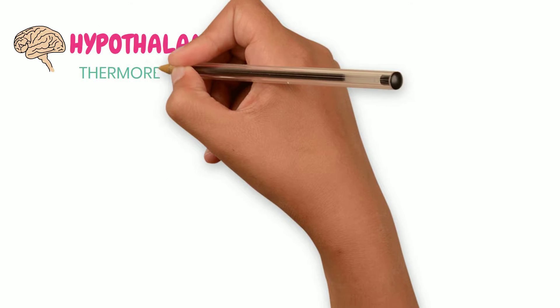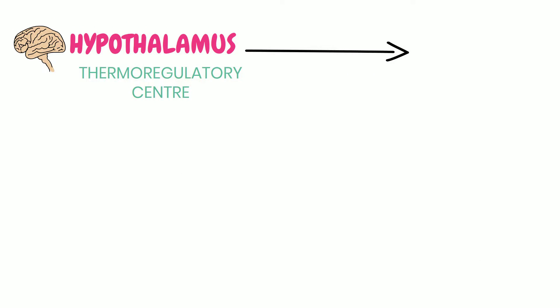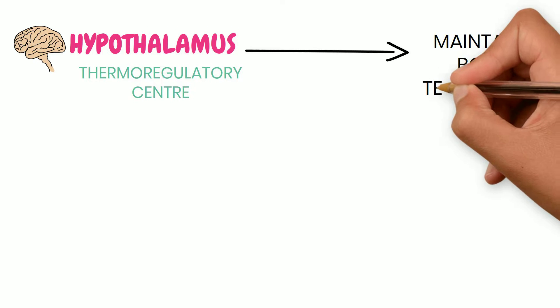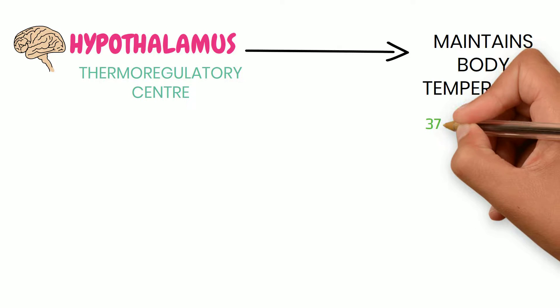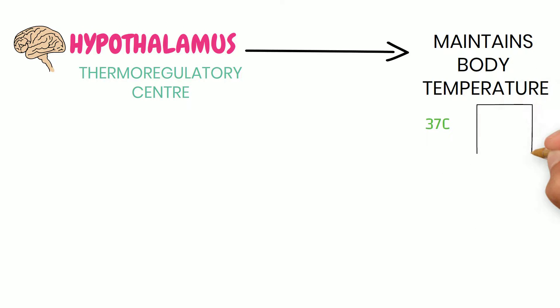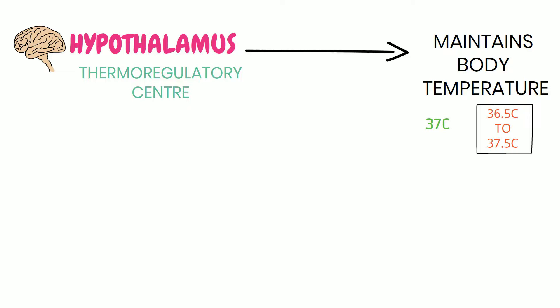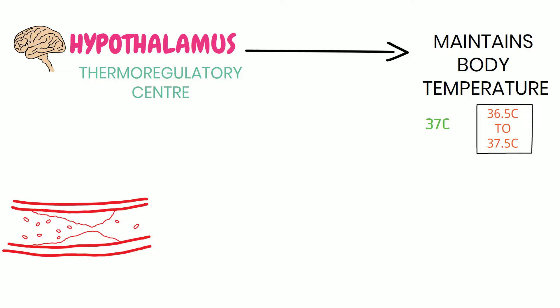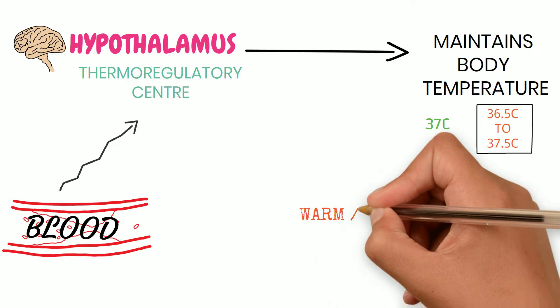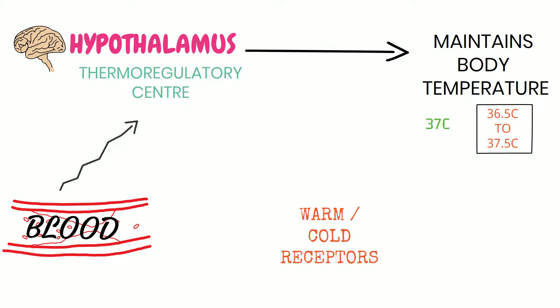The hypothalamus in the brain contains the thermoregulatory center. This maintains body temperature despite environmental variations within a narrow range — around 37°C, between 36.5°C and 37.5°C. The hypothalamus detects body temperature from the temperature of blood surrounding it, and also receives impulses from warm and cold receptors present in the skin and other deep tissues.